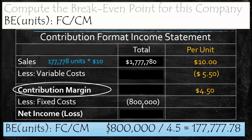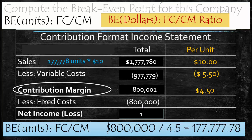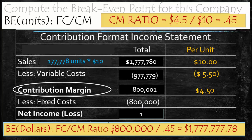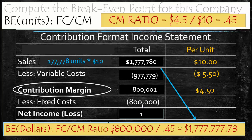With 177,778 units, we can compute total sales by multiplying by the selling price, and variable costs by multiplying by $5.50. Subtracting variable costs yields a contribution margin of approximately $800,000, matching fixed costs and confirming break-even. Alternatively, break-even in dollars uses fixed cost divided by the contribution margin ratio. Our CM ratio is $4.50 divided by $10, which equals 0.45. Dividing fixed costs by 0.45 yields a total sales figure that closely approximates the result from the units-based calculation — both methods produce similar results.